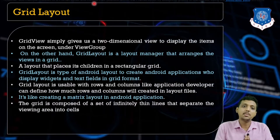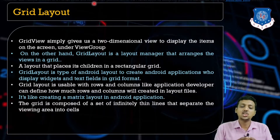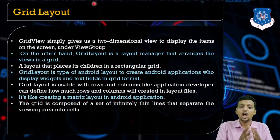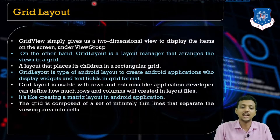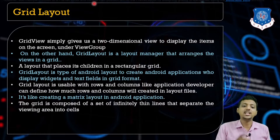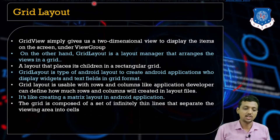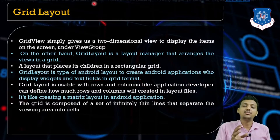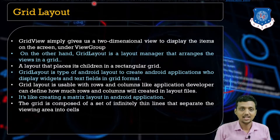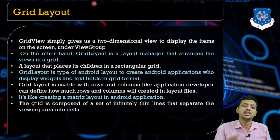Grid Layout displays data in the form of rows and columns. The application developer can specify how many columns and rows are there in the layout file. It also creates a matrix layout inside the Android application. The grid is composed of a set of infinite thin lines, meaning each grid cell is separated by thin lines.